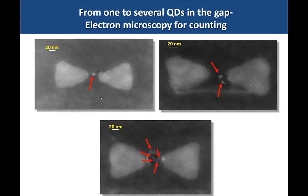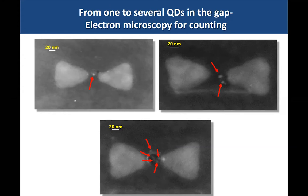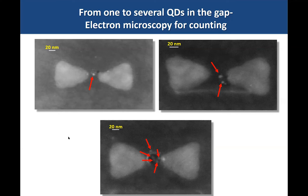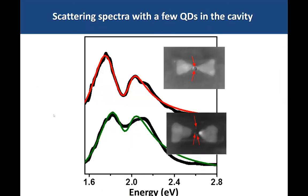Here are several bowties formed in the lab with quantum emitters inside. The quantum emitters we use are colloidal quantum dots. We developed a process to introduce one to several quantum dots into the cavity, and although we don't have absolute control over the number, after spectroscopy we can look at the bowties using scanning electron microscopy and actually count them. Here's an example with a single quantum dot, two quantum dots, and five quantum dots — a big advantage over molecules, which we cannot readily count.